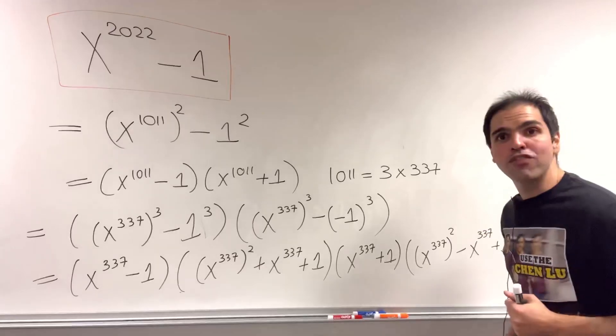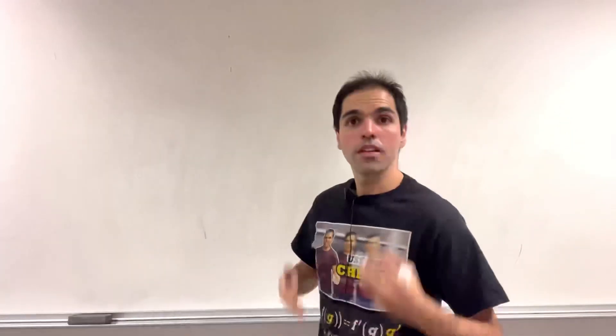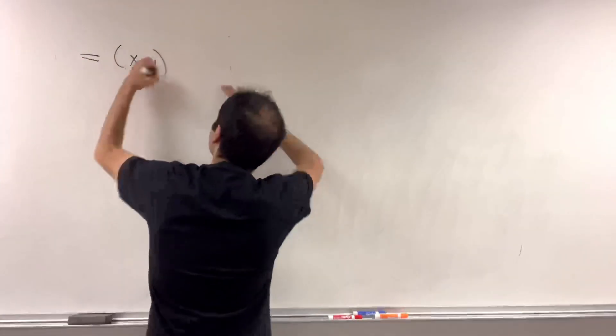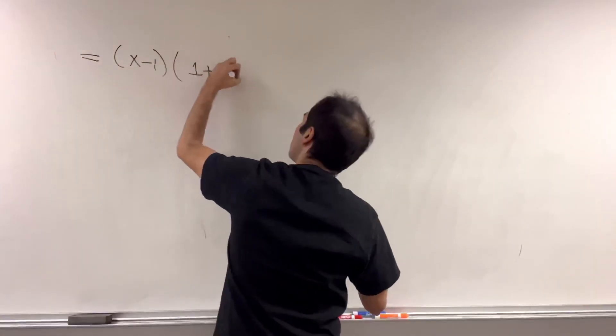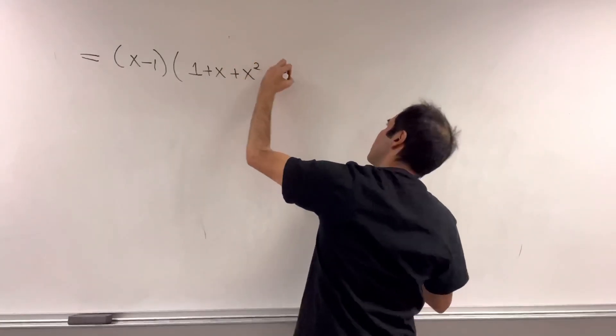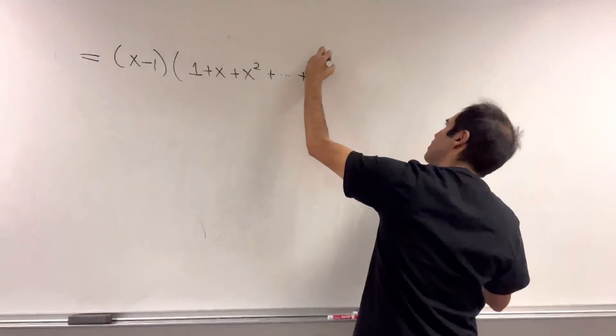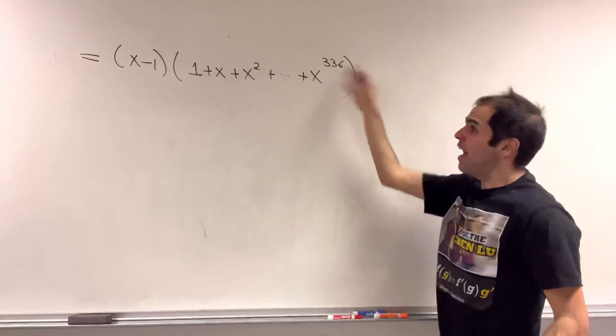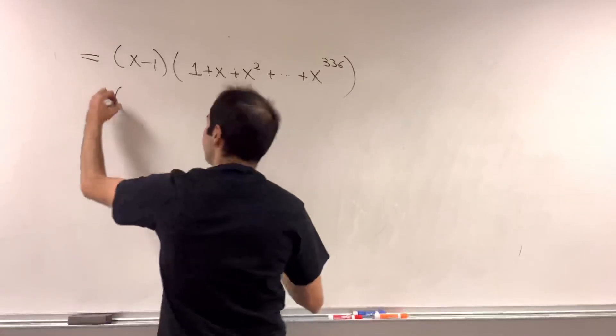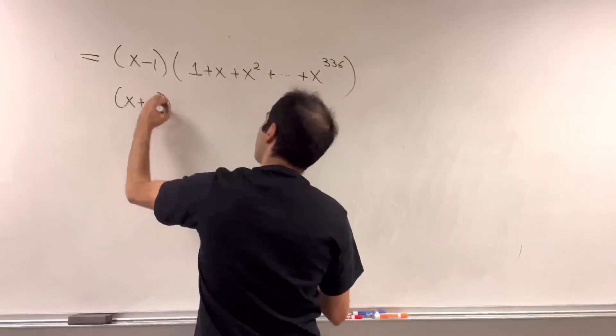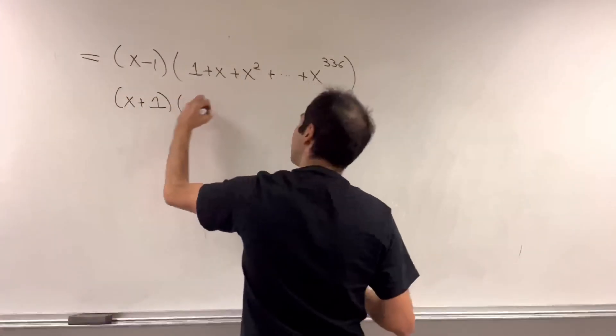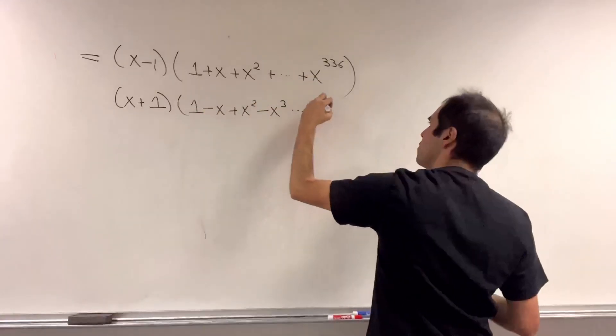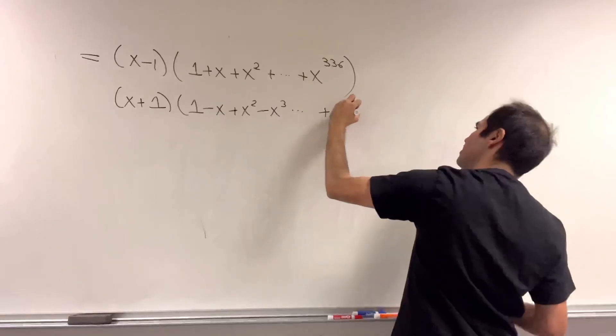And therefore, we obtain the following expression. So what we get is x minus 1 times 1 plus x plus x squared plus dot dot dot plus x to the 336, so x to the n minus 1. And same spiel with the other term, so times x plus 1, but you replace x with minus x. So we have this alternating sum, and then plus x to the 336.